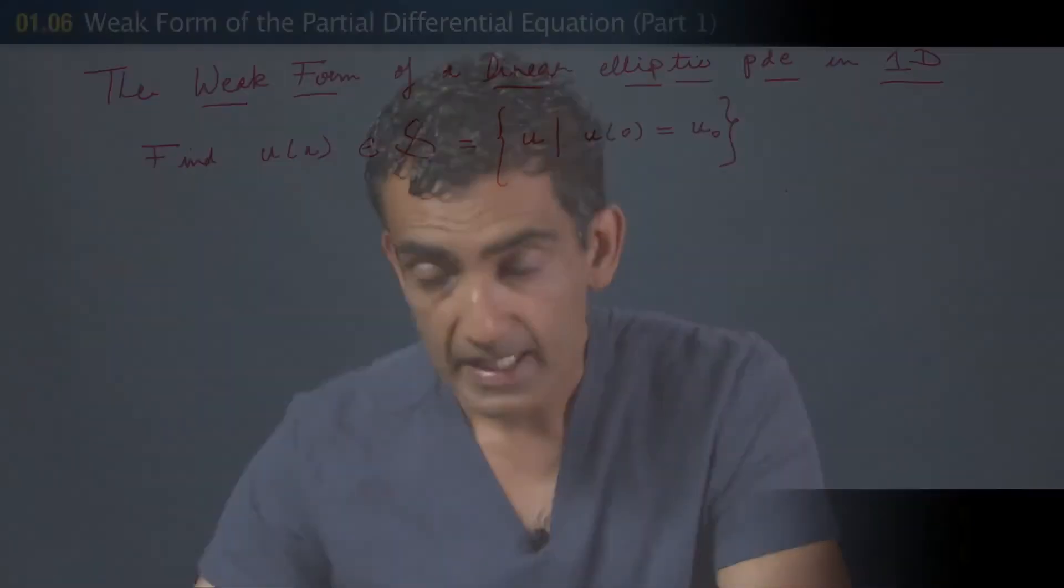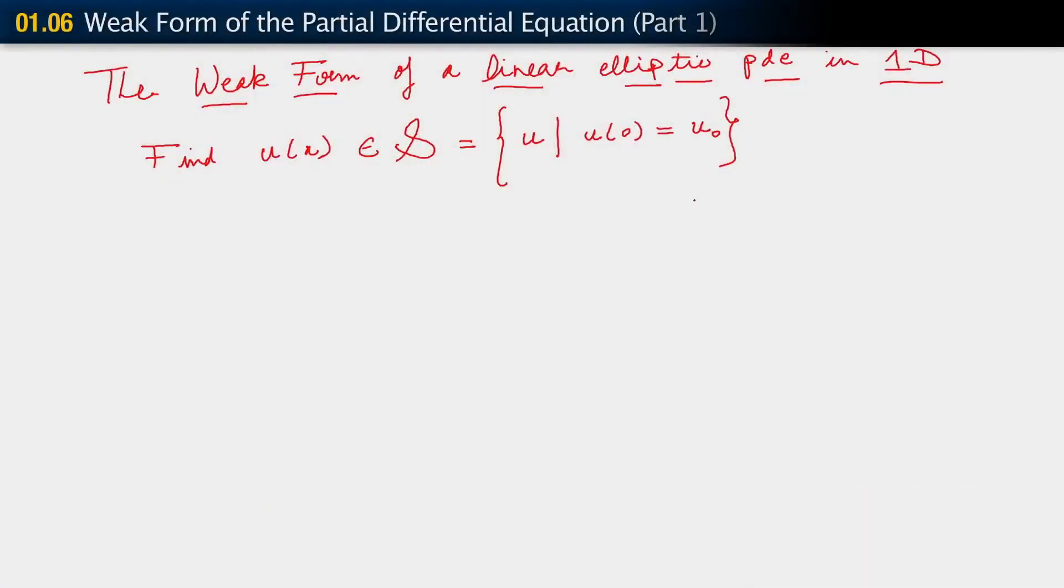Later on, we will see what happens when we have Dirichlet boundary conditions at x equals 0 and x equals l. All right? If we did have that, we would build that condition also into the space s. For now, we're just saying that we have a single Dirichlet boundary condition.